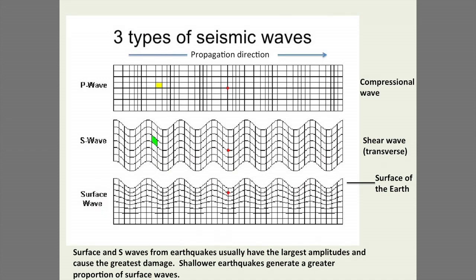Seismic waves travel at speeds of several kilometers or more per second — it takes about ten minutes for seismic waves to go from one side of the country to the other. A felt earthquake is when the ground motion becomes generally perceptible to human beings, which occurs when accelerations become greater than about a percent of the acceleration of gravity. There's a quick compressional P-wave much like a sound wave, a shear wave, and surface waves. The shear waves and surface waves are what can actually cause appreciable damage in most cases.